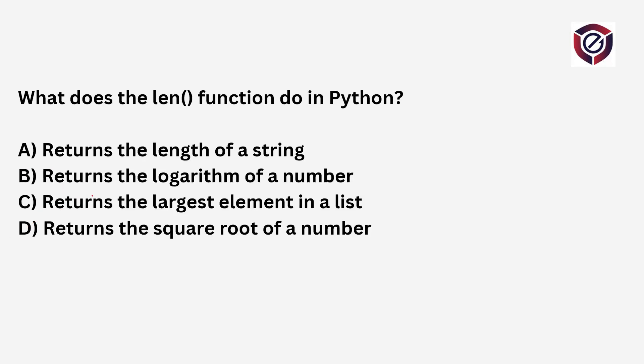What does the len function do in Python? The len function can be used with multiple data types — lists, tuples, and strings — for the same purpose. The options are: returns the length of a string (yes, correct), returns the logarithm of a number (no, use the log function for that), returns the largest element in a list (no, use the max function), and returns the square root of a number (no, use the sqrt function). The correct option is A — returns the length of a string. Note: it would also be correct if options mentioned length of a tuple, list, or dictionary.